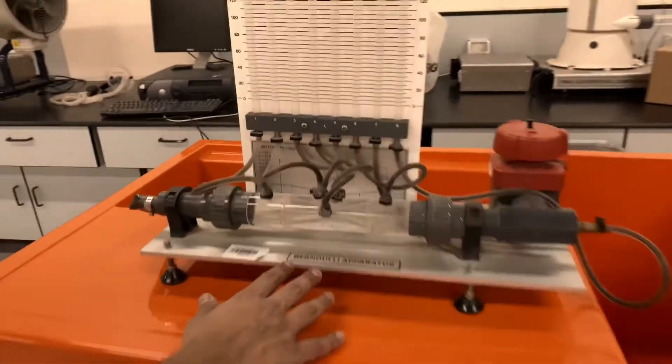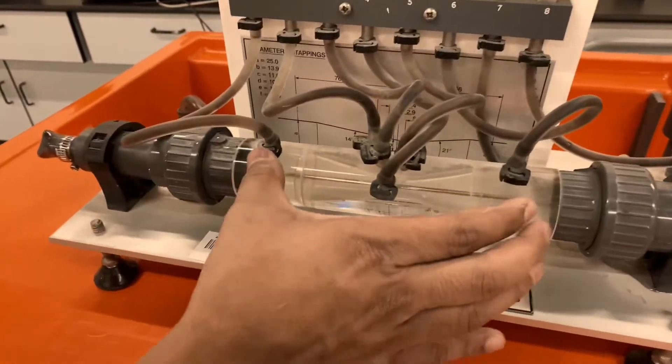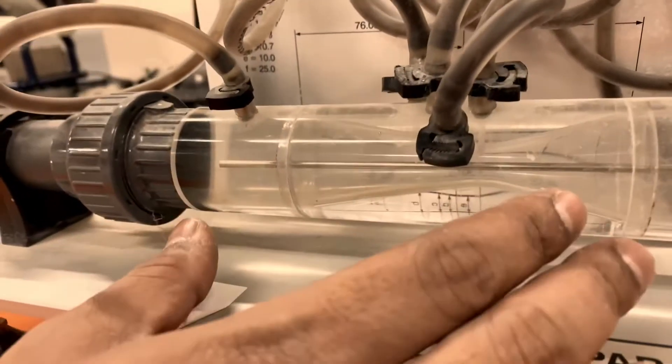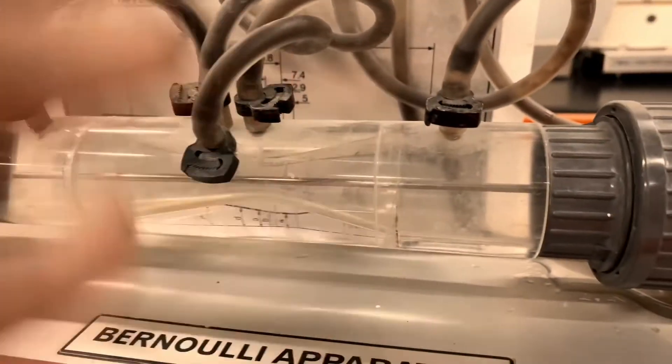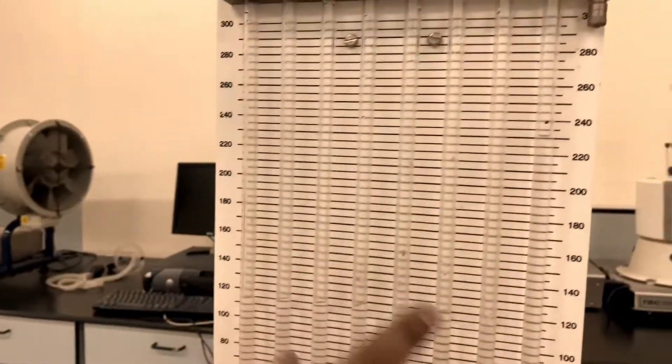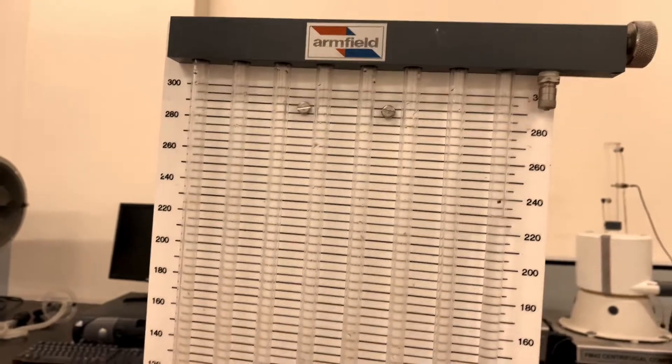As you can see, it has a pipe section which is also called a venturi section. You will learn this later. We have manometer tubes which tell you the pressure head value at different locations.